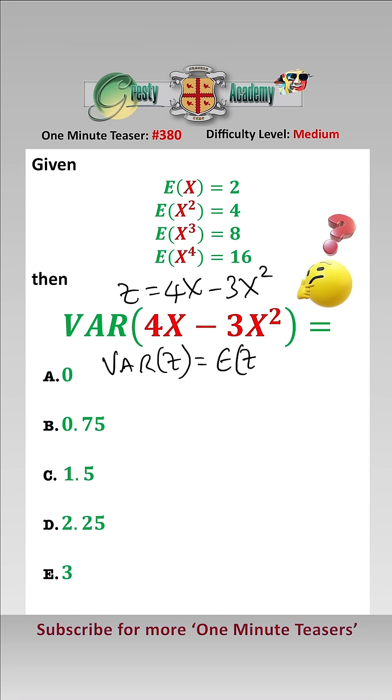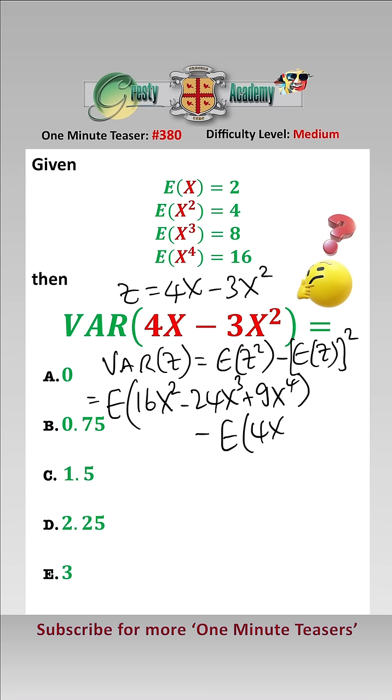That equals E of z squared minus E of z squared. So that equals E of 16x squared minus 24x cubed, add 9x to the 4, minus E of 4x minus 3x squared, squared.